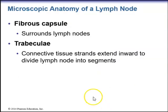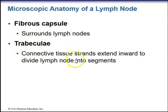Now we get into the microscopic anatomy of a lymph node. Surrounding the entire lymph node is a fibrous capsule. Within the lymph node, we have structures called trabeculae — connective tissue strands that extend inward to divide the lymph node into segments. The type of connective tissue found in lymph organs such as the spleen and lymph nodes is reticular connective tissue.